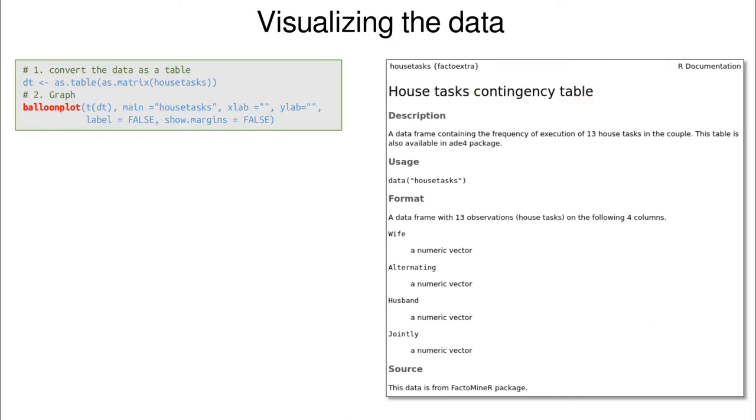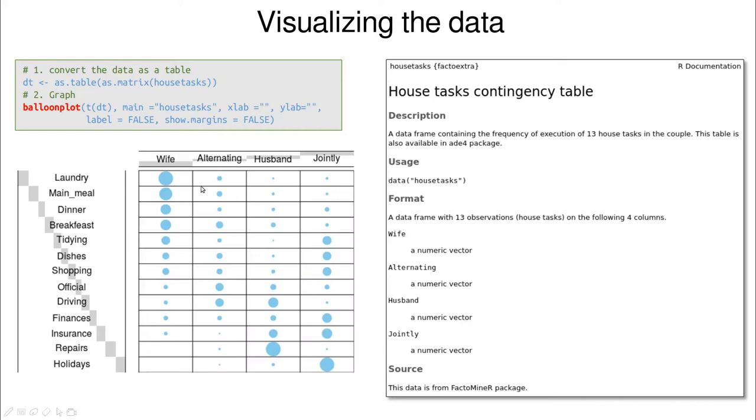If you don't like to explore tables using the numbers including that table, you have a lot of functions. One of them is called balloon plot, which is going to give you the same information. But now the larger the cycle, the larger is going to be the entry in that table. So here you can see that basically wife is taking care of the laundry, main meal, dinner, and so on and so forth. But there is some overlapping in different columns.